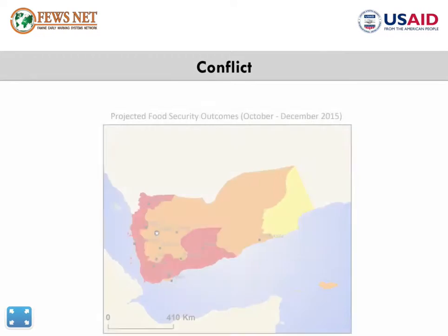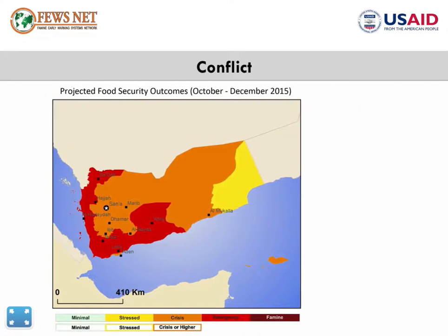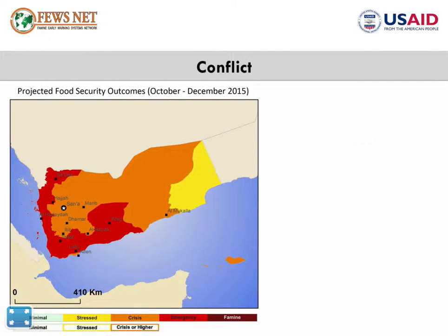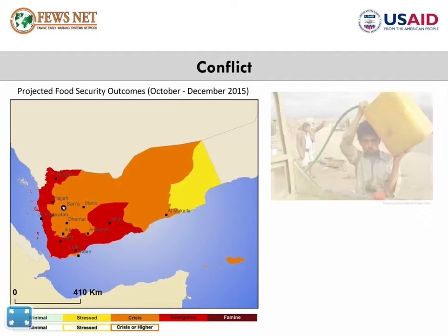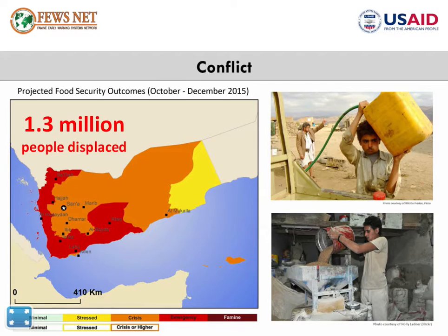Conflict is one of the main drivers of food insecurity in the region. In Yemen, fighting continues to drive widespread food insecurity, leaving at least 6 million people in need of emergency food assistance. Diesel and wheat flour, the main staple food, are sporadically available and only at extremely high prices. OCHA estimates that some 1.3 million people are displaced. IPC Phase 4 emergency is likely to continue through at least December.